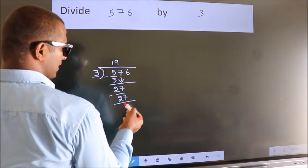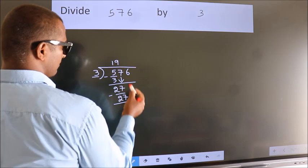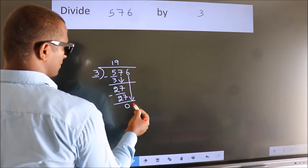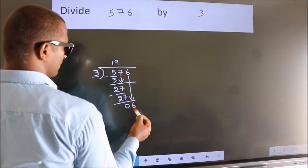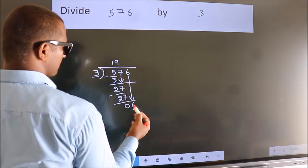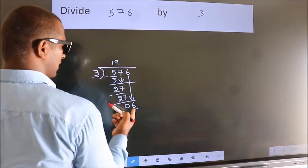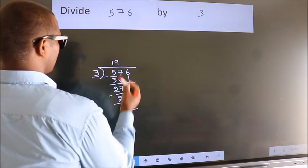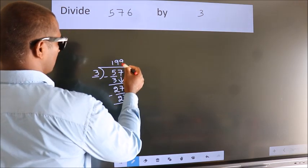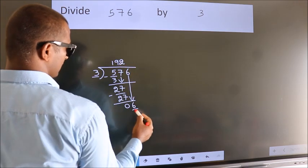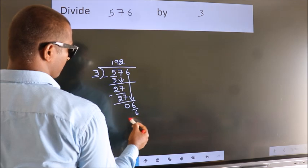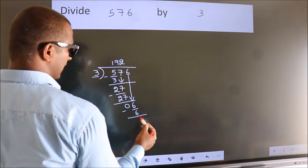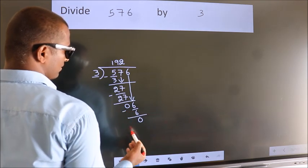After this, bring down the beside number. So, 6 comes down, giving us 6. When do we get 6 in the 3 times table? 3 twos — 6. Now we subtract. We get 0.